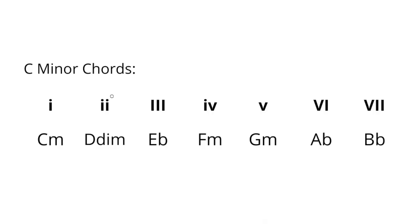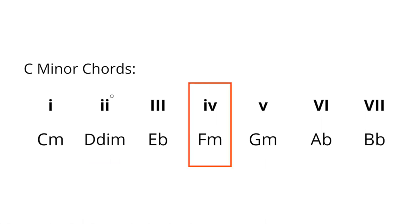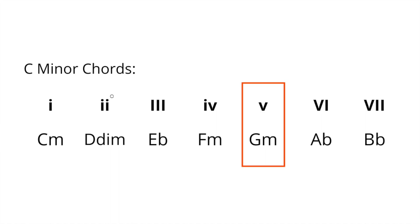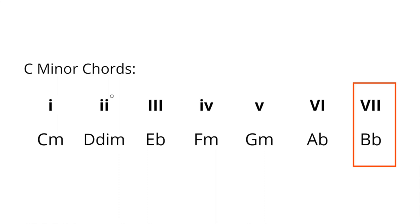As I said in the introduction, the concept of borrowed chords is that we can borrow chords from the parallel minor. The parallel minor to C major is C minor, and they're parallel because both keys have C as the root note. In the key of C minor, we have: C minor, D half diminished, E flat major, F minor, G minor, A flat major, B flat major, and C.